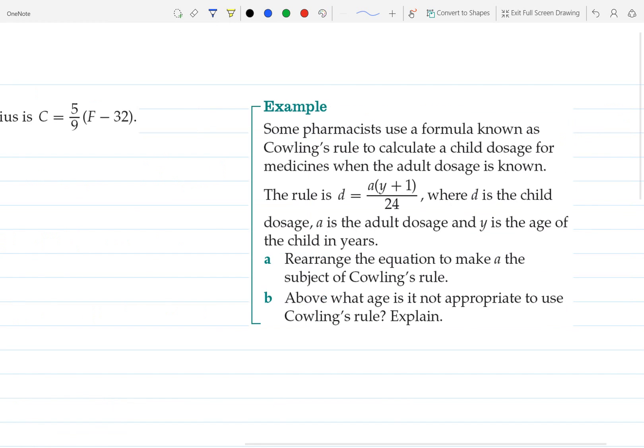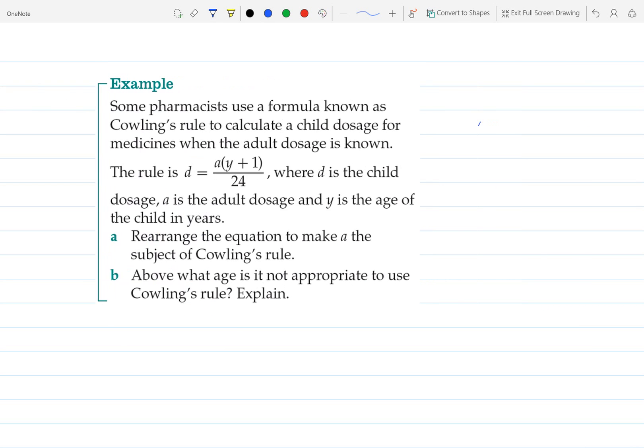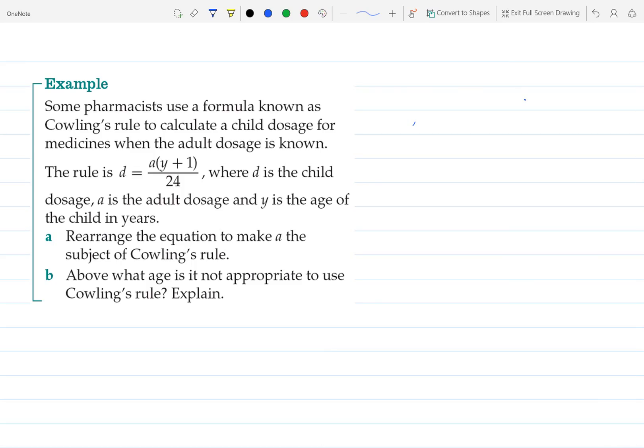Okay, let's look at our next example. We have some pharmacists using a formula known as Cowling's Rule to calculate dosage for medicines when the adult dosage is known.